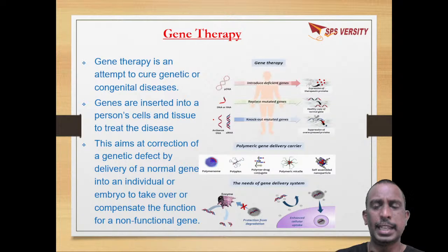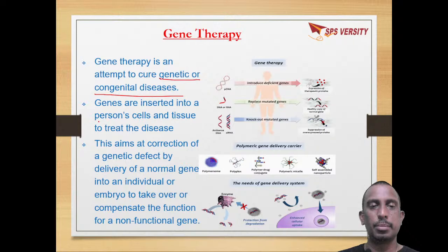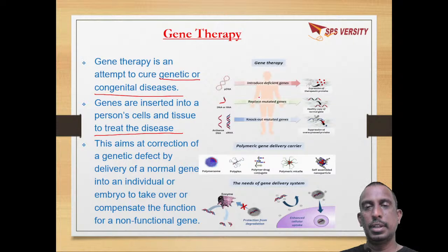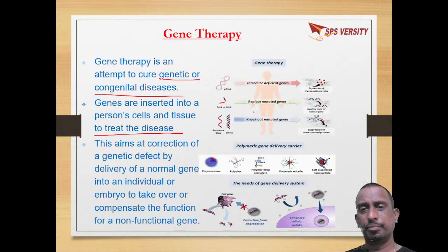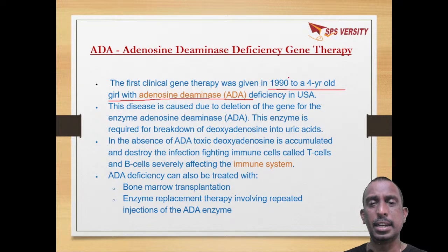The next application is gene therapy, used to cure genetic diseases present from birth. In gene therapy, normal genes are extracted from a healthy cell and replace the deficient genes so the cell functions normally. This was first done in 1990 for a four-year-old girl with ADA deficiency — adenosine deaminase deficiency. ADA deficiency is caused by deletion of the gene for the enzyme adenosine deaminase.